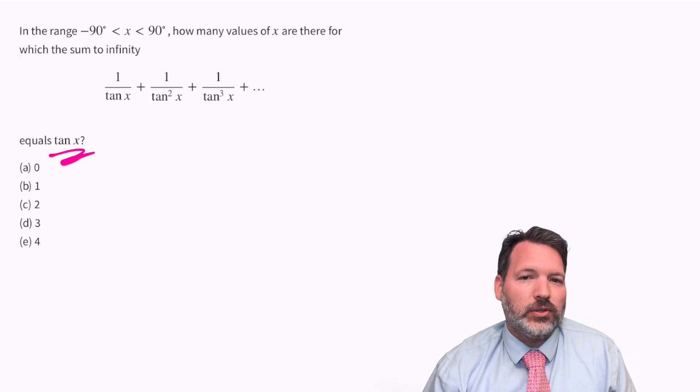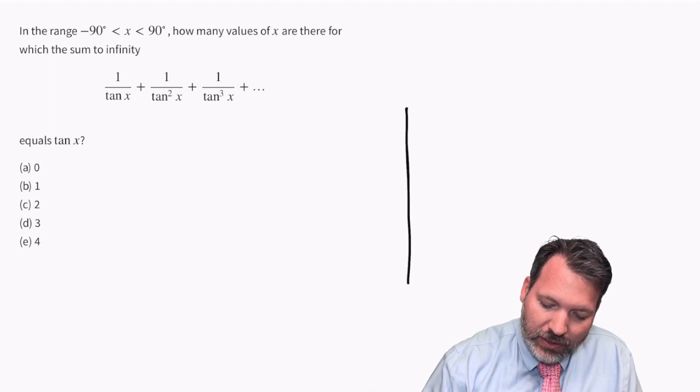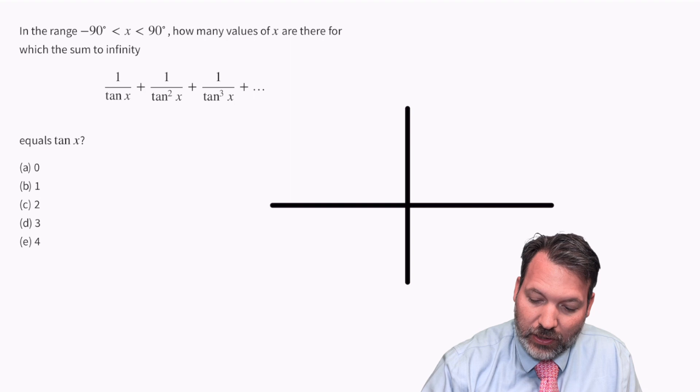One key thing to notice right away is we're not actually interested in what those values are, we just want to know how many of them there are. Now that crazy infinite series 1 over tan x plus 1 over tan squared x plus 1 over tan cubed x, I have no idea what that looks like.